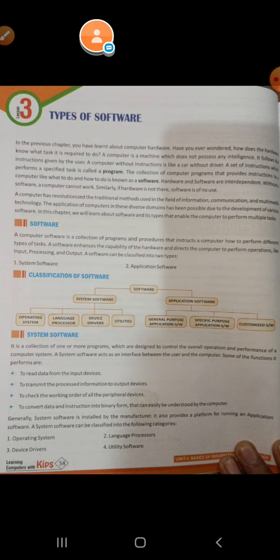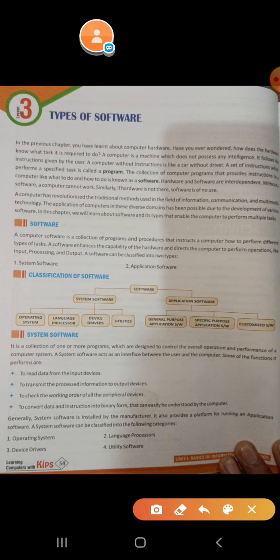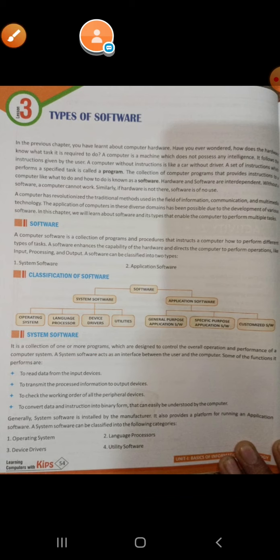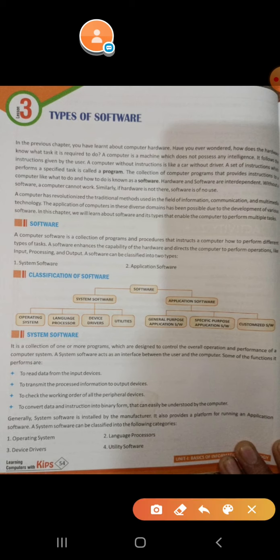What is system software? It is a collection of one or more programs which are designed to control the overall operation and performance of a computer system. These are programs designed so that we can control the functions of the computer.